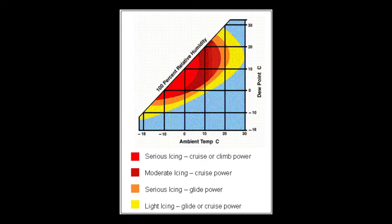Applying carburetor heat reduces the available power to the engine because we're providing warmer, less dense air. It also enriches the fuel-air mixture, possibly making combustion less efficient and causing the engine to produce even less power. So the goal is to determine when we're likely to get carburetor icing, remain vigilant at all times, and be ready if it occurs.